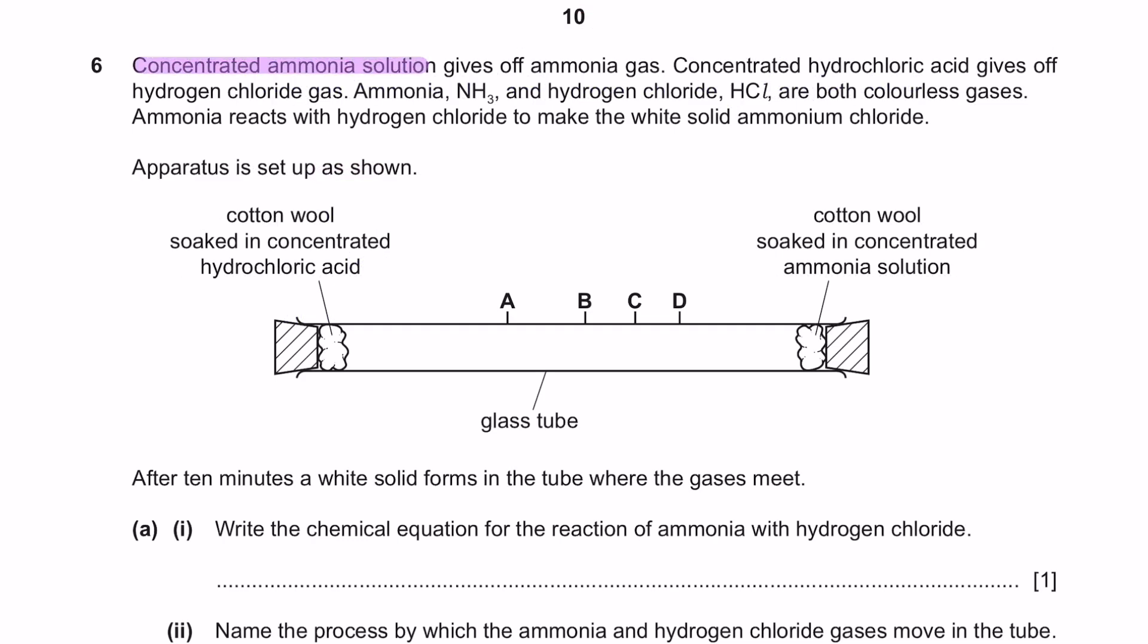Next is a question that's testing on diffusion. Concentrated ammonia solution gives off ammonia gas. Concentrated hydrochloric acid gives off hydrogen chloride gas. Ammonia and hydrogen chloride are both colourless gases. Ammonia reacts with hydrogen chloride to make the white solid ammonium chloride. The apparatus is set up as shown. Alright, so we've got hydrochloric acid on one side and ammonia solution on the other side. Basically, what happens is that hydrochloric acid will release hydrogen chloride gas, and the ammonia solution will release ammonia gas. Now, these two gases would react with each other to form ammonium chloride, which is a white solid. It says that after 10 minutes, a white solid forms in the tube where the gases meet. So, the gases travel and it meets somewhere, within the range of A to D.